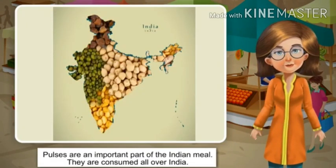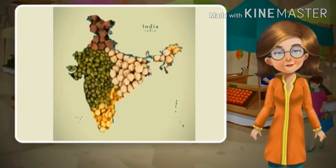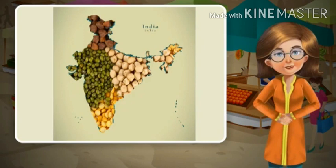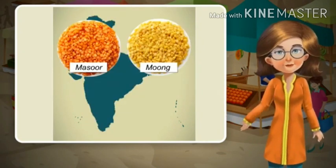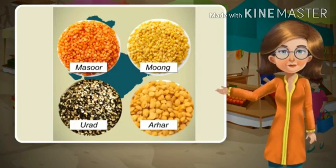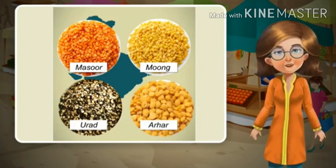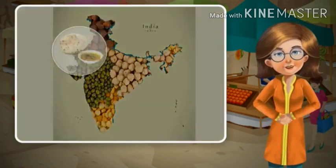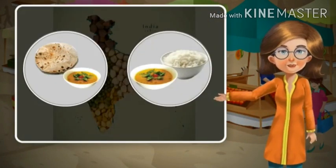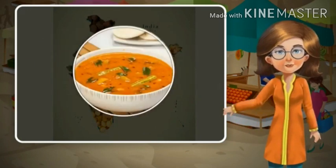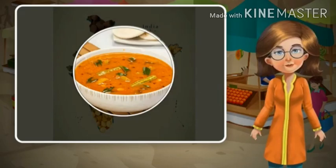Pulses are also an important part of the Indian meal. They are consumed all over the country. Some of the popular pulses grown and consumed in India are masoor, moong, urad, and arhar — also known as dal. People in north India eat roti with dal, rice with dal is consumed in eastern India, and in south India, sambar is prepared using pulses and vegetables.